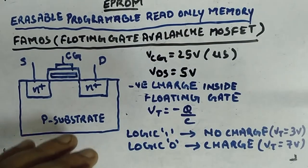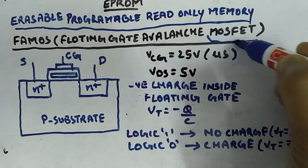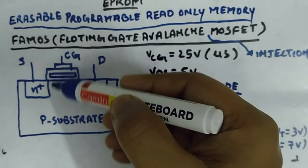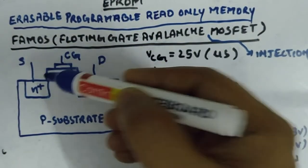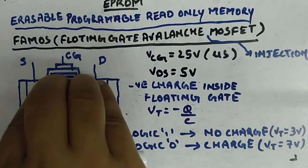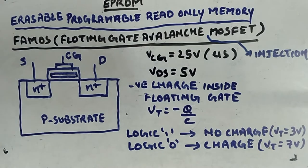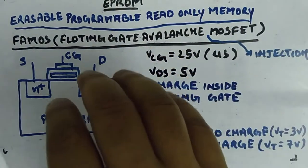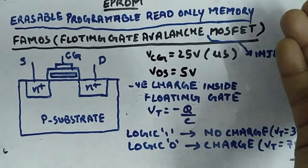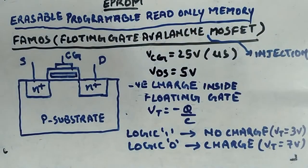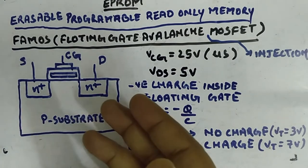The full name FAMOS includes 'avalanche injection' because the charges get injected from the channel into the floating gate. Since more charges are present, for conduction of FAMOS you need to apply more control gate voltage — that will be explained for reading. This is the programming phase: designing the transistor to have either state 0 (charge present, higher threshold) or state 1 (no charge, lower threshold).